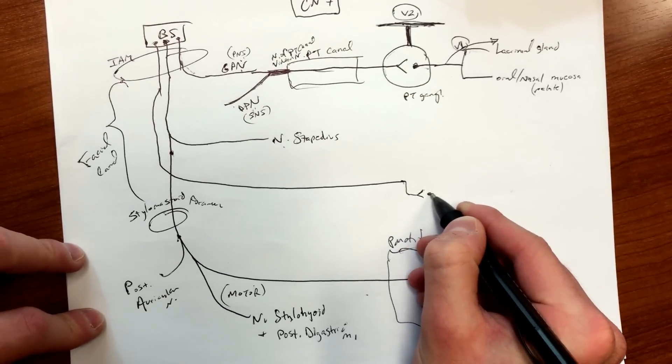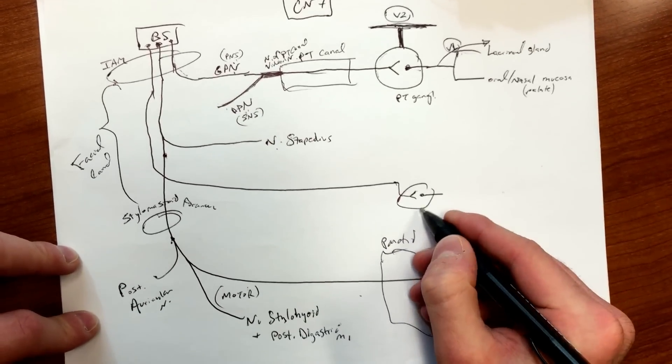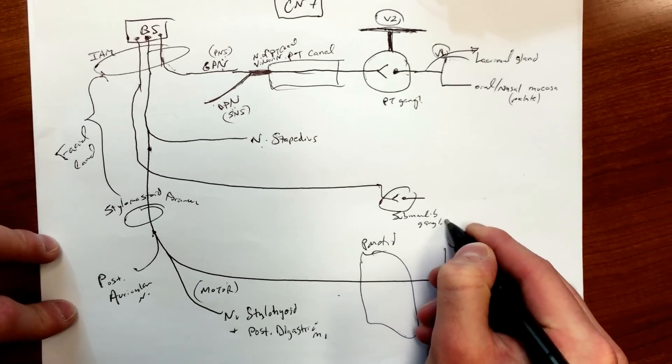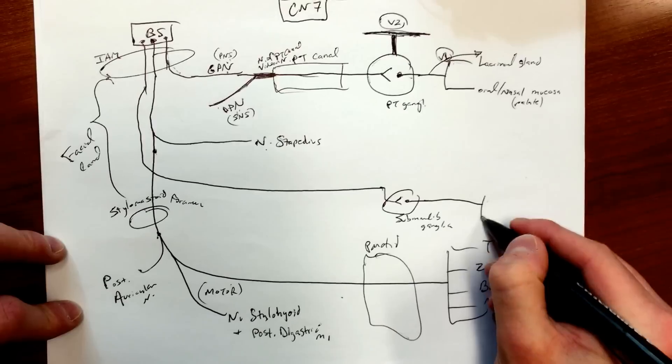And like we mentioned earlier, chorda tympani is gonna try to synapse - I'm gonna do it like that - and this is the submandibular ganglia.